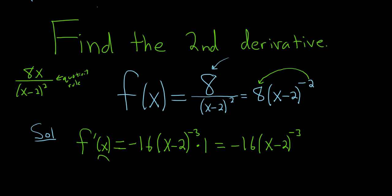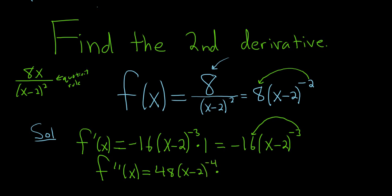That's the first derivative. Now we just have to do it one more time. F double prime of x: put the negative 3 in the front — that's going to be 48. Leave the inside untouched, subtract 1 to get negative 4, times the derivative of the inside, which is 1 — since the derivative of x is 1 and the derivative of negative 2 is 0. So this equals 48 over (x minus 2) to the 4th power.